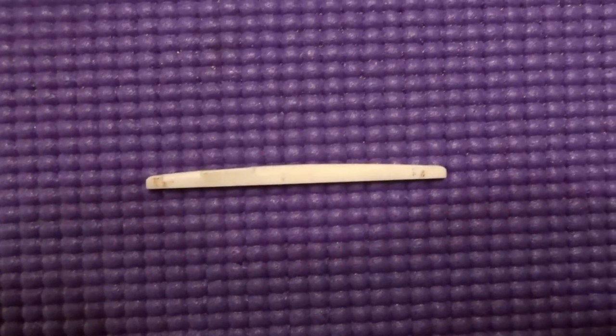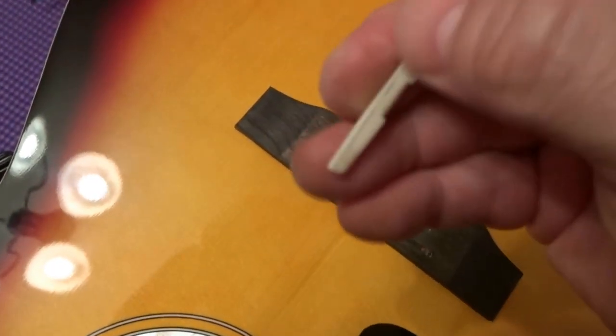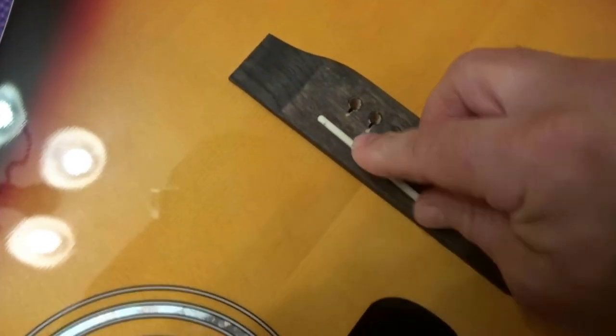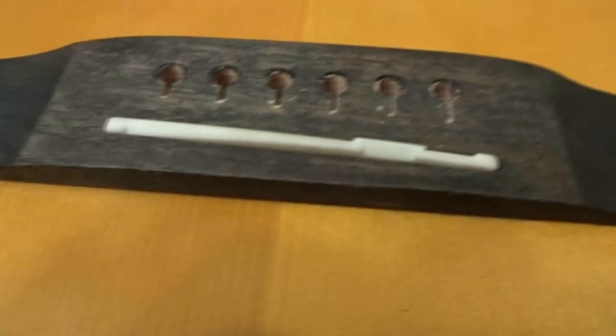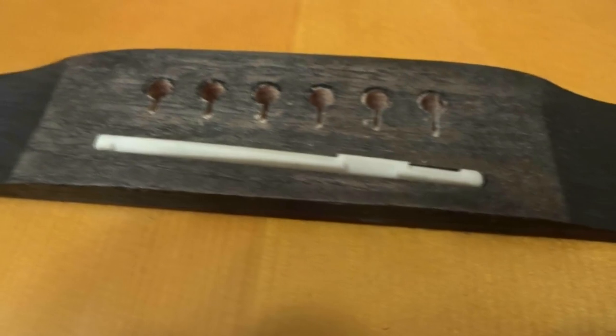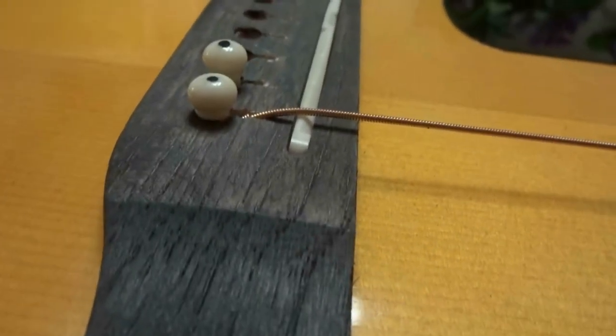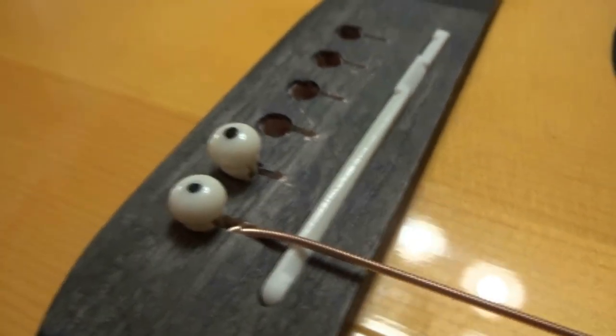So just to give you an idea how big that saddle actually is. It ain't much. And when you look at it, there's nothing left there. I mean, it is done. I'm not resetting the neck or anything like that. So there you go. You can see how that is. And I don't even think I'm going to put ebony stain in it.